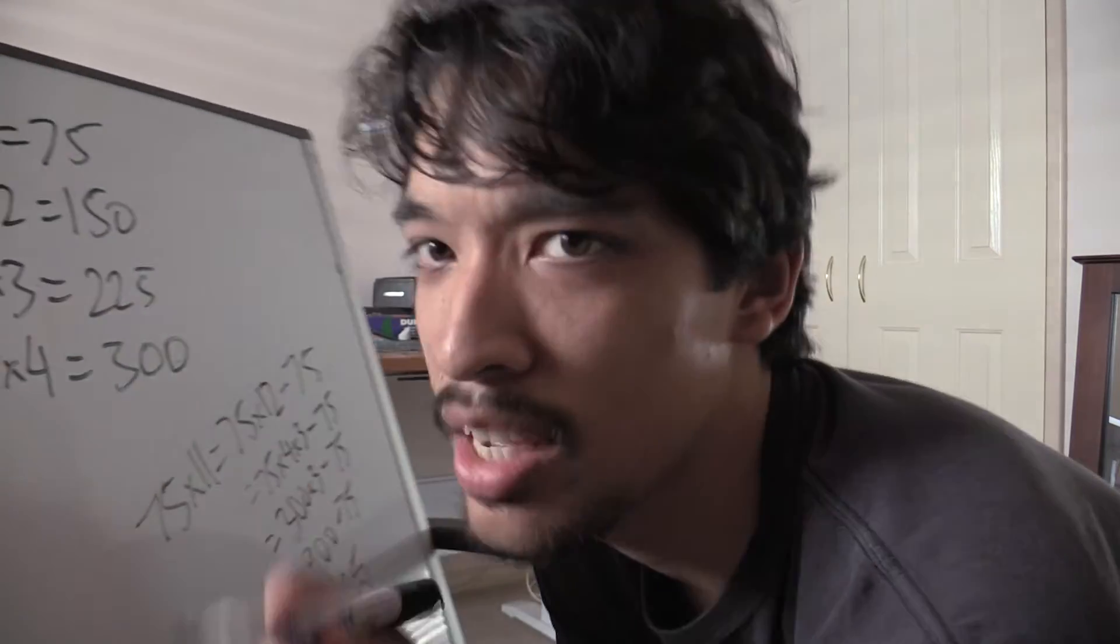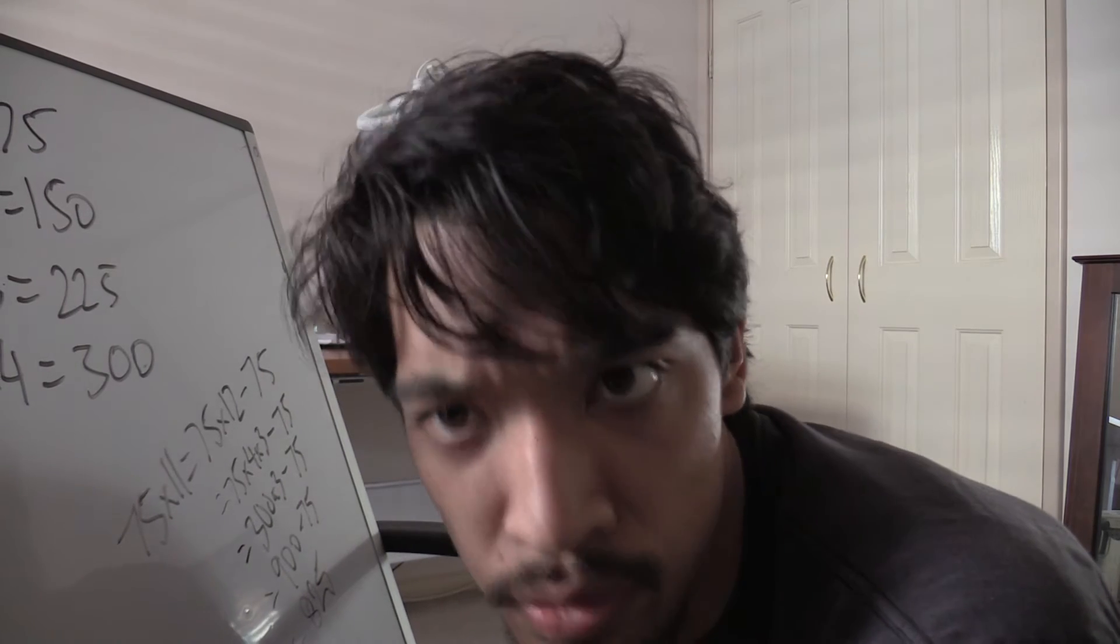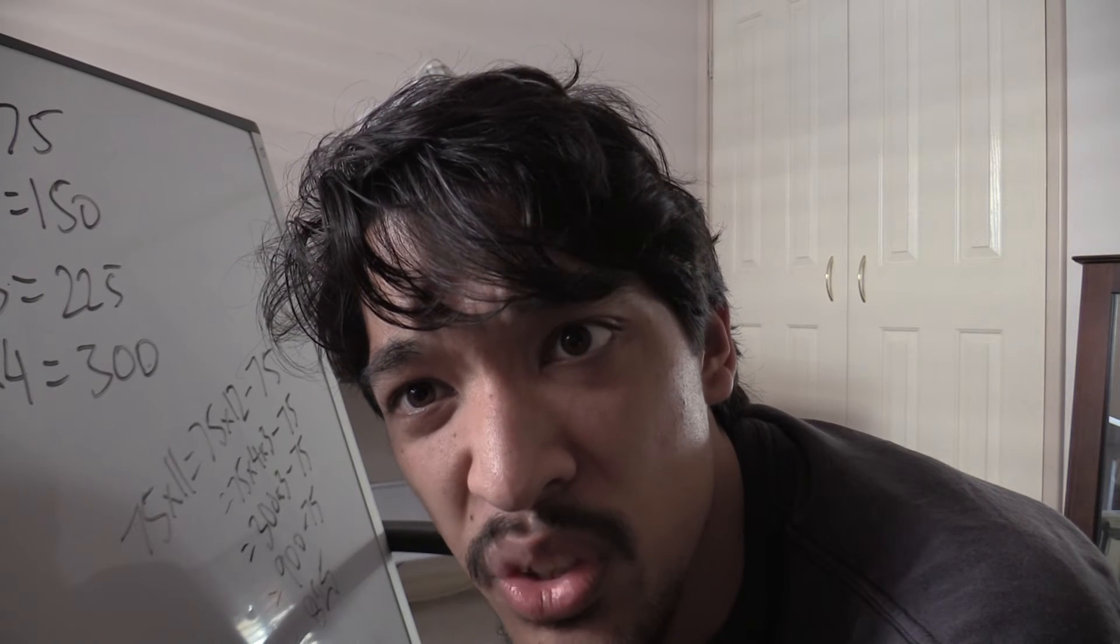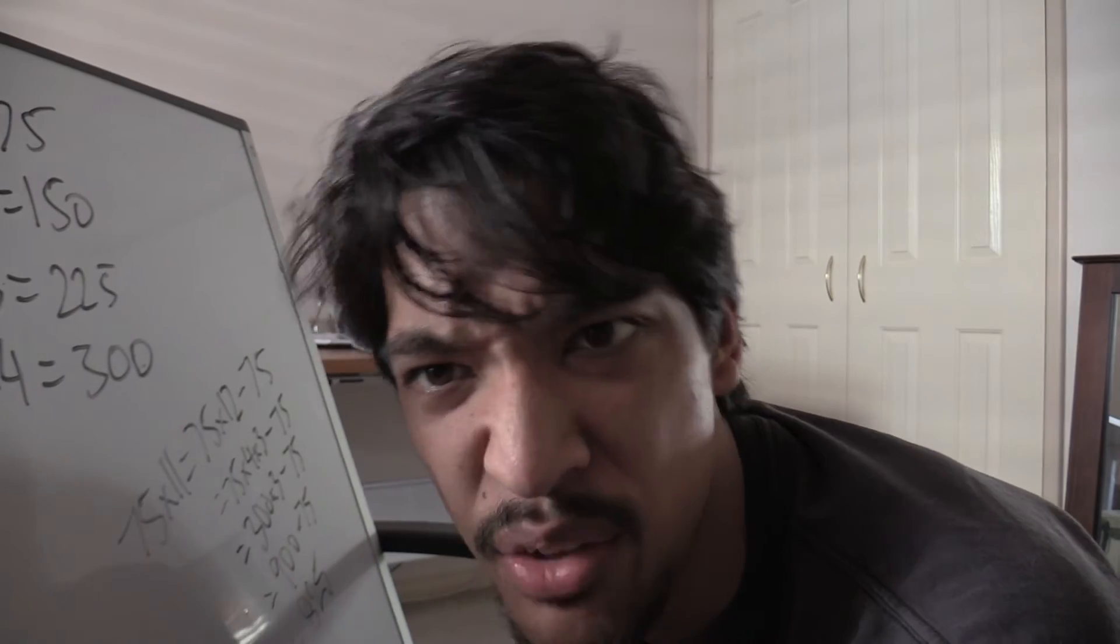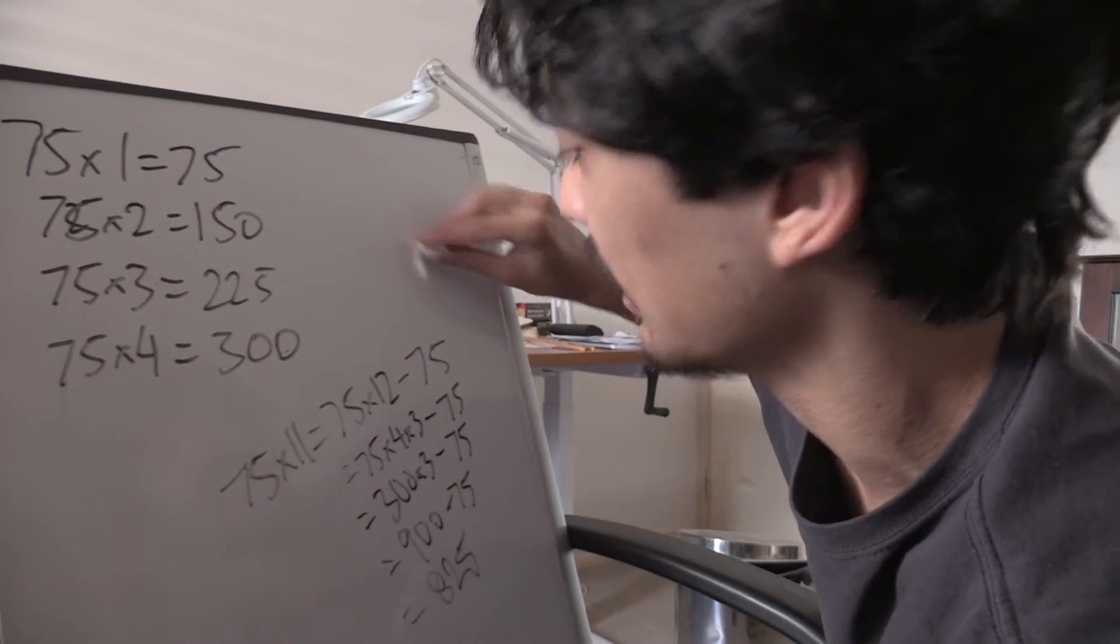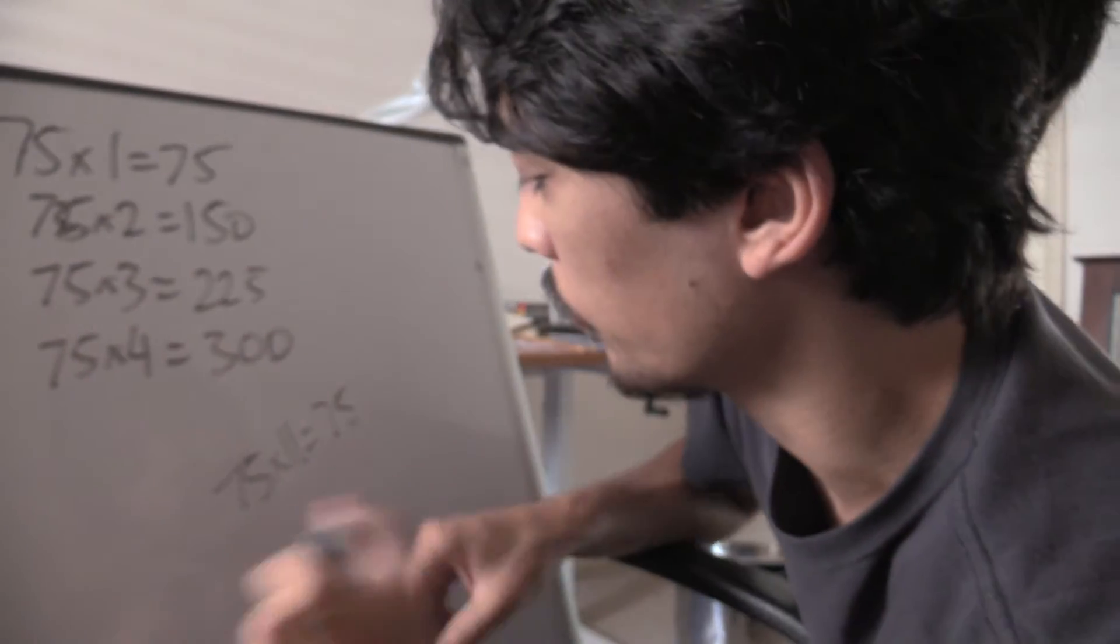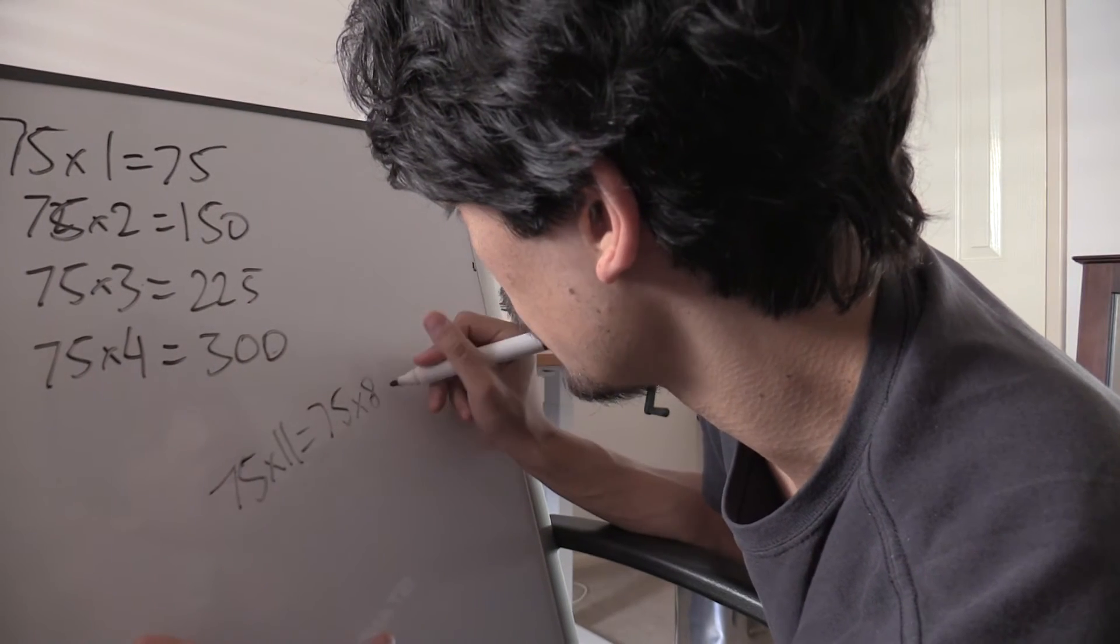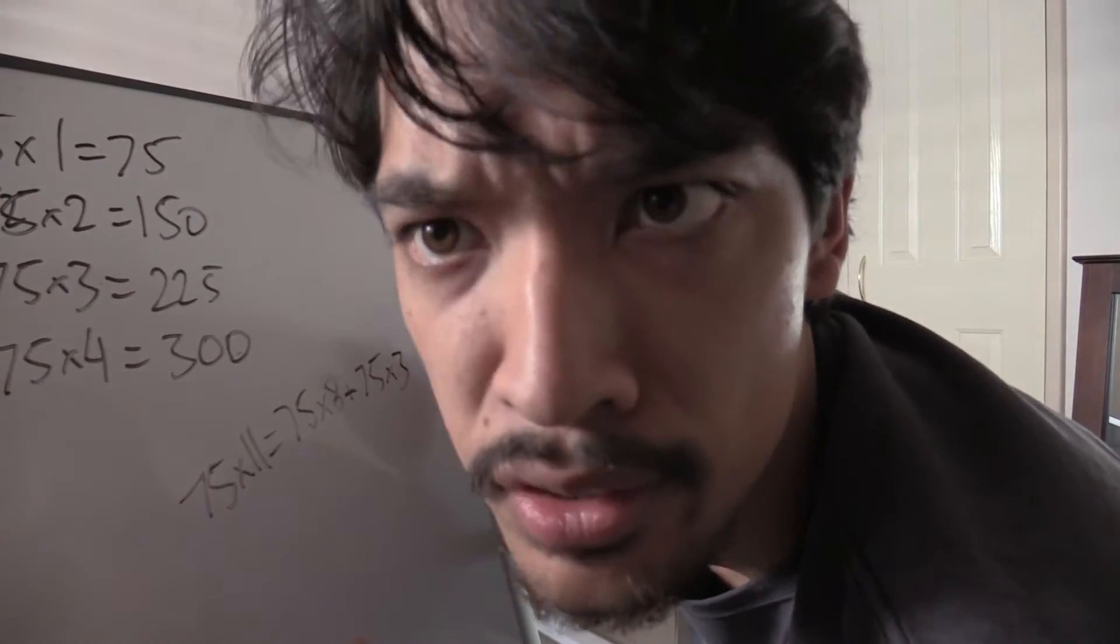Now, you can also do 75 times 10 add 75, because everyone knows that 75 times 10 is 750. That's probably the easier way. Or alternatively, you can do a slightly harder way but that still works because that's how numbers work. You can go 75 times 11 equals 75 times 8 add 75 times 3, because 8 plus 3 is 11.